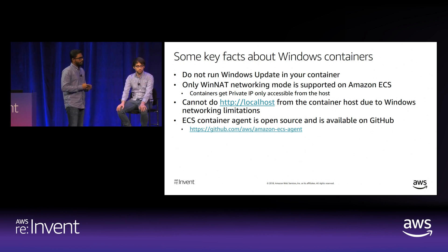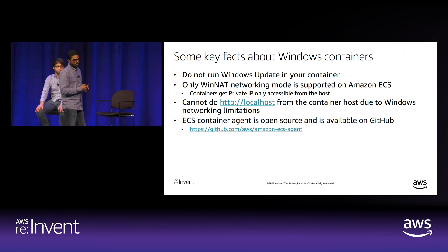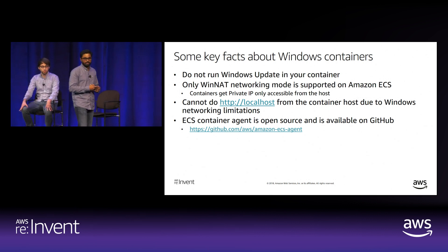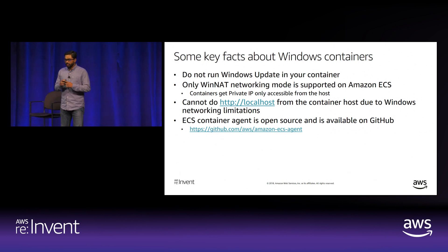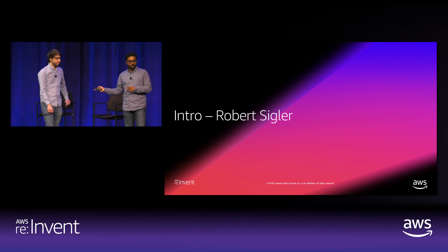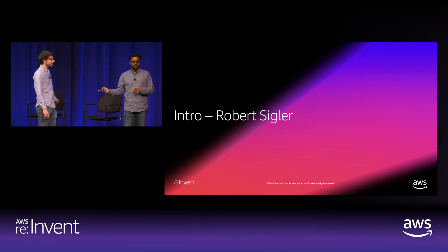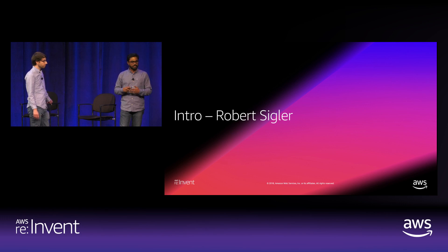The ECS container agent is open source and available on GitHub. We encourage pull requests from anyone interested in contributing. With that, I'll hand over to Robert, who will talk about how Thomson Reuters used ECS and other services to host their legacy Windows applications on Windows containers on Amazon ECS.